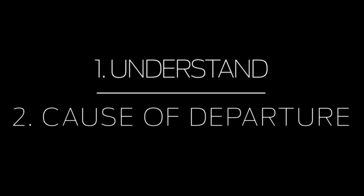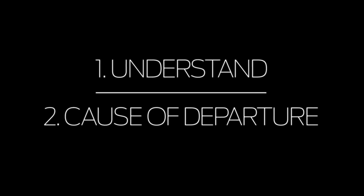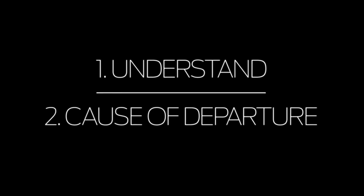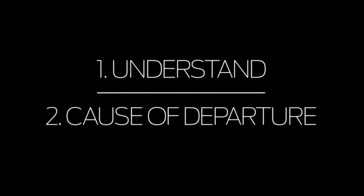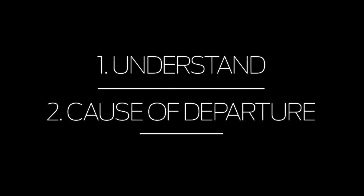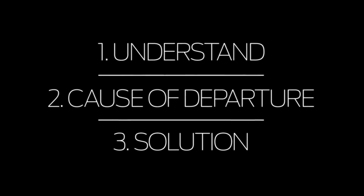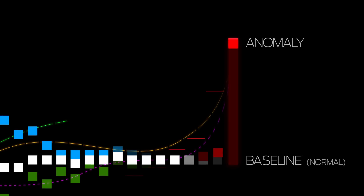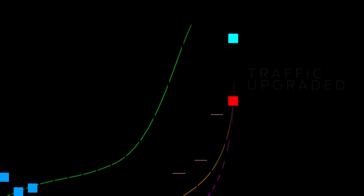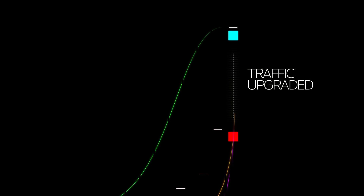Step one is to understand what the baseline is. Step two is to understand what the cause of the departure from the baseline is. And step three is: how do I deal with it — do I increase the amount of traffic allowed to go on the circuit, or do I shut the gates?